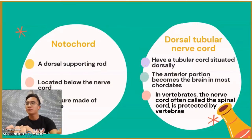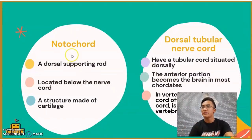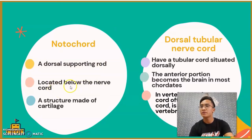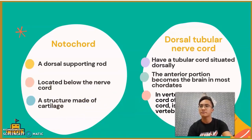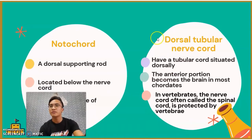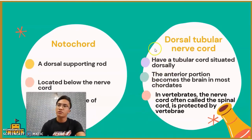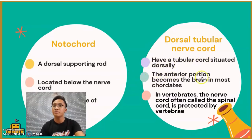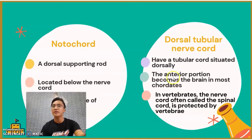I'm going to explain each one by one. The notochord is a dorsal supporting rod located below the nerve cord, and it is a structure made of cartilage. For the dorsal tubular nerve cord, it is a tubular cord situated dorsally. The anterior portion becomes the brain in most chordates. In vertebrates, the nerve cord — often called the spinal cord — is protected by vertebrae.